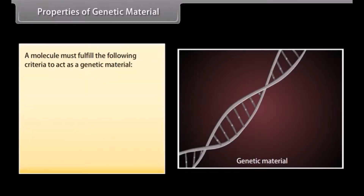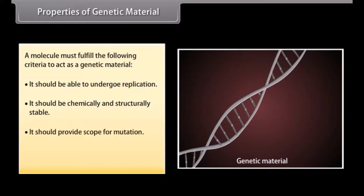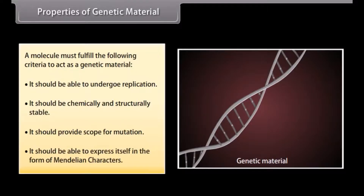A molecule must fulfill the following criteria to act as genetic material: it should be able to undergo replication; it should be chemically and structurally stable; it should provide scope for mutation; and it should be able to express itself in the form of Mendelian characters.